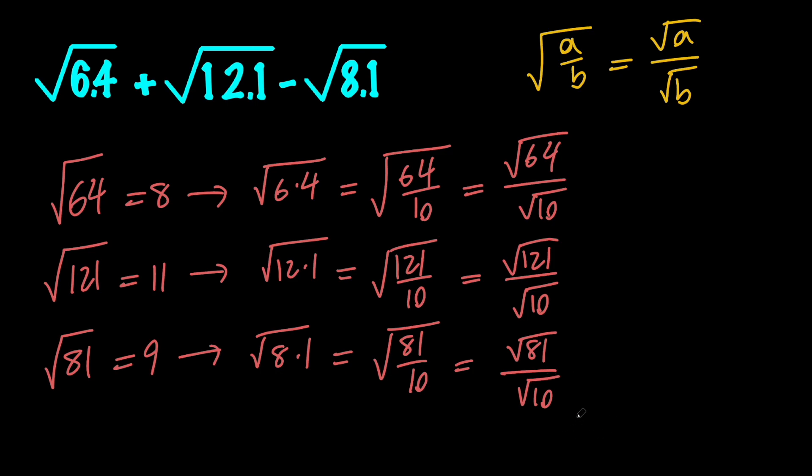We know that the square root of 64 is 8, so this is equal to 8 over root 10. The square root of 121 is 11, so we have 11 over root 10, and this is 9 over root 10.